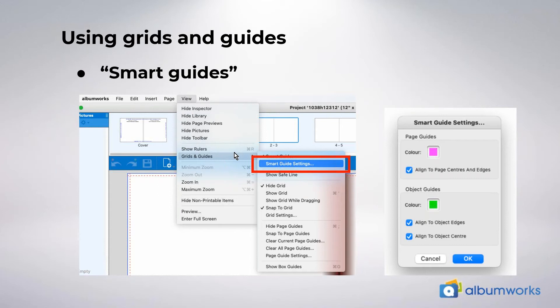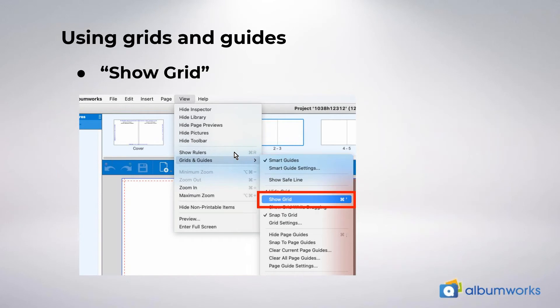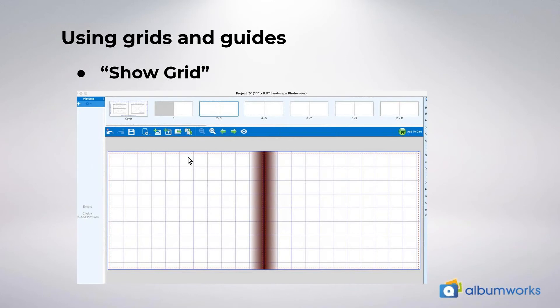Next let's look at grids. It's exactly as it sounds — you can turn on a virtual grid for your album which can help you measure distance between items on the page, or you might want to align items to the virtual grid itself. Turning on the grid is in the same menu: View > Grids and Guides > Show Grid. Usually the grid shows one centimeter between each line, but in the grid settings you can adjust it to show every millimeter or whatever interval you prefer.